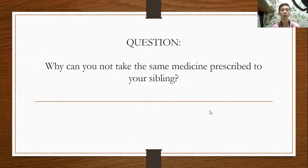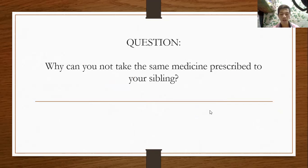Here is a question: Why can you not take the same medicine prescribed to your sibling? This is the reason why you cannot use or share medicines with anyone else. These medicines can be dispensed only from a pharmacy or a licensed pharmacist. Prescription medicines are usually more powerful than OTC medicines. They can be used to treat both minor ailments and more serious diseases, and can be harmful if misused. Examples of medicines that need a prescription are pain relievers, antibiotics, and anti-inflammatories.